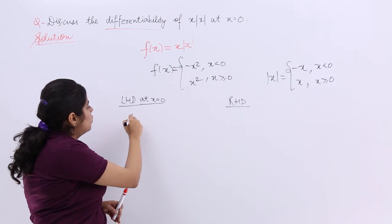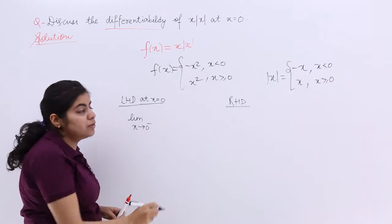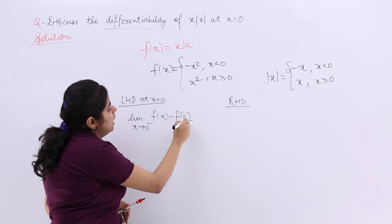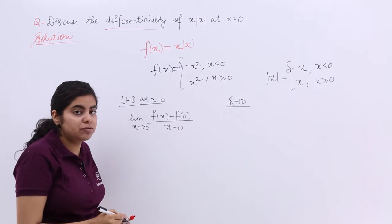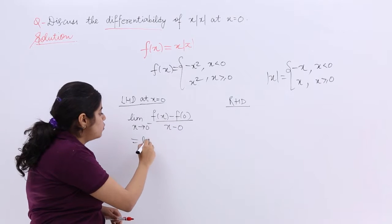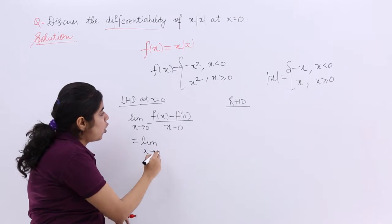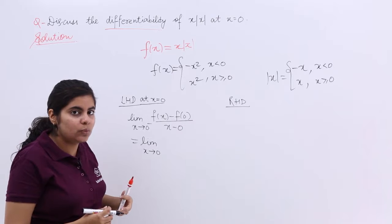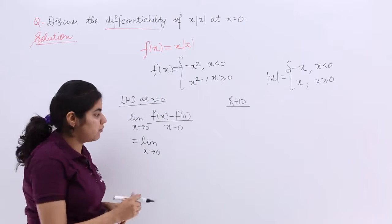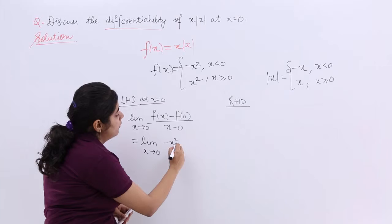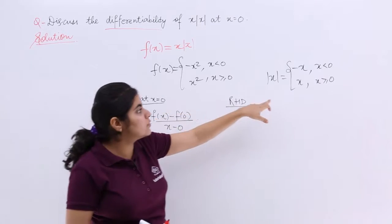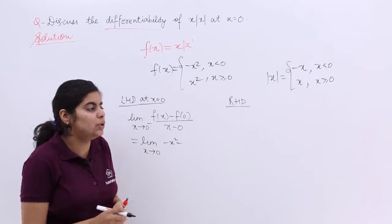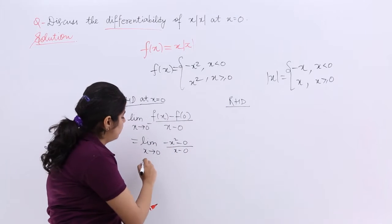I have to basically go for limit x tends to 0 negative and the differentiability says f of x minus f of a upon x minus a should be the formula. What about f of x in case of left hand derivative? Left hand derivative means less than 0 and less than 0 means minus x square is my f(x). So it is minus x square minus f of 0. f of 0 means equal to 0, equal to 0 means x only or 0 only upon x minus 0, right?